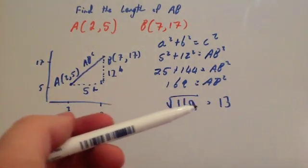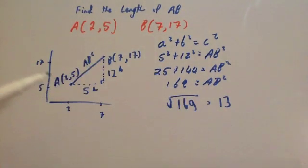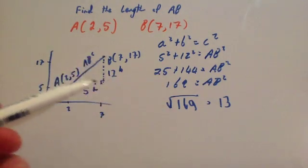Notice I haven't put 13 centimeters, I've just put 13, because it's just the length of the line, and there's no units given in the question, it's on a coordinate grid. So the length of the line AB is 13.